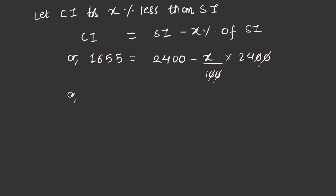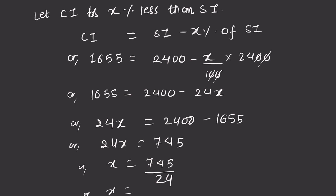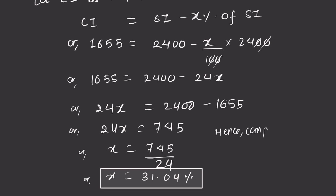Compound interest is RS 1655, simple interest is RS 2400. So: 2400 minus 24X equals 1655. Therefore 24X equals 2400 minus 1655 = 745. X equals 745 divided by 24. Solving: X is equal to 31.04 percent.